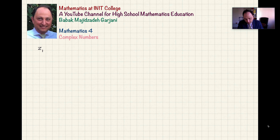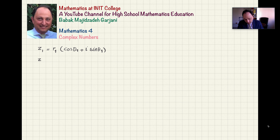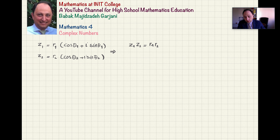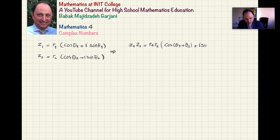Let me refresh your memory a little bit. If I have two complex numbers written in the polar form, so r1 is the absolute value of z1, theta1 is the argument of z1, and z2 is r2 times cosine theta2 plus i sine theta2, we learned that if I want to multiply them, we can simply multiply the absolute values and then add the arguments. We were able to prove this and saw a nice pattern.